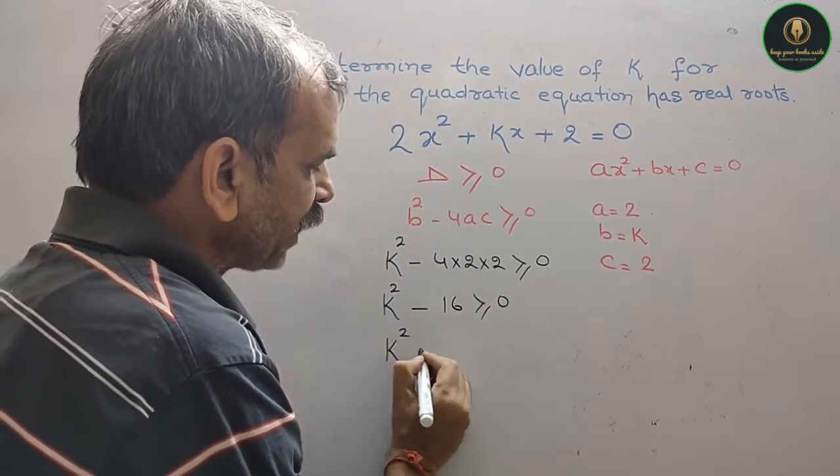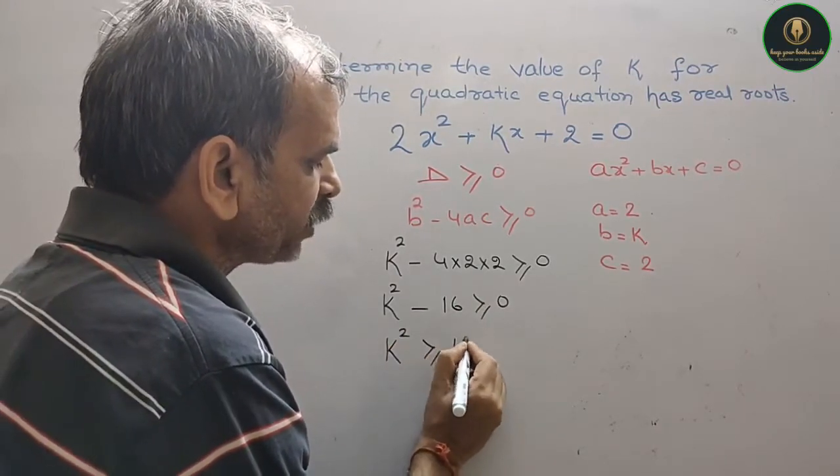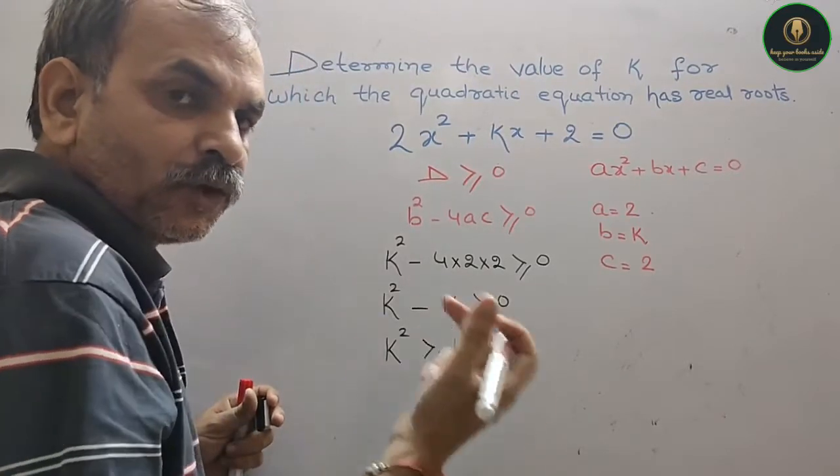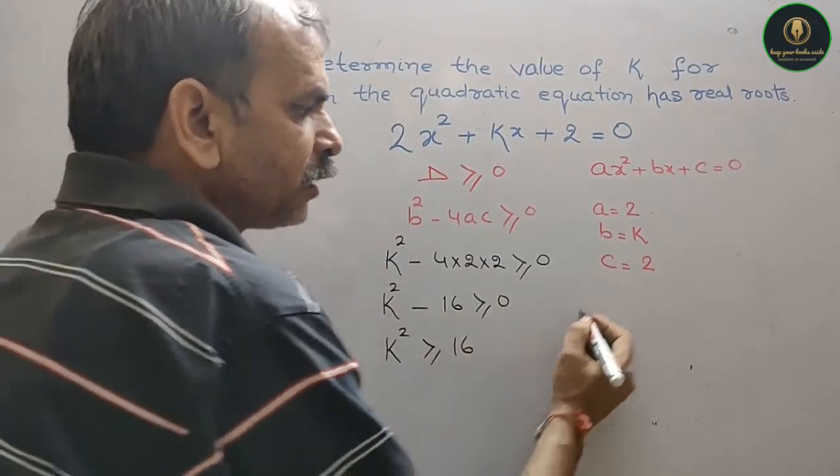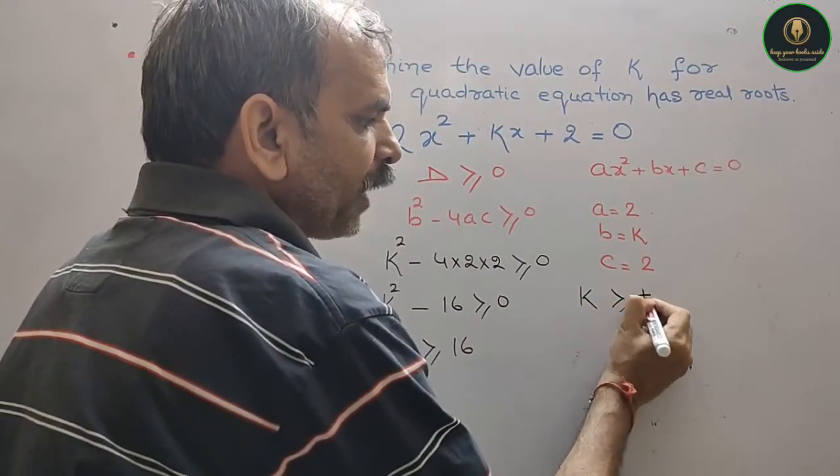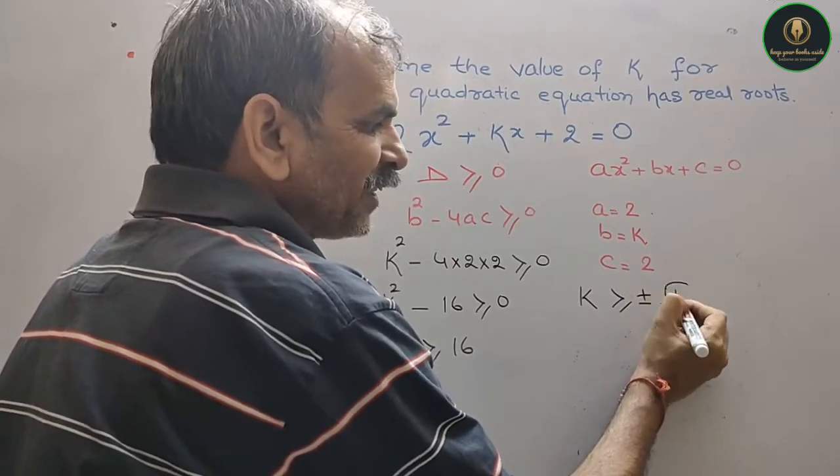Now, k² is greater than equal to 16. So, k is greater than equal to plus minus root 16.